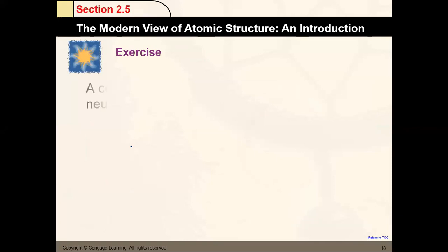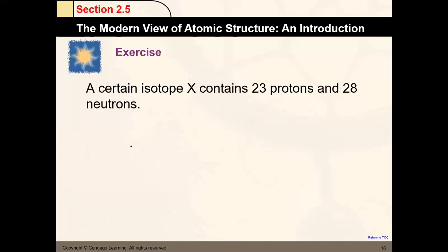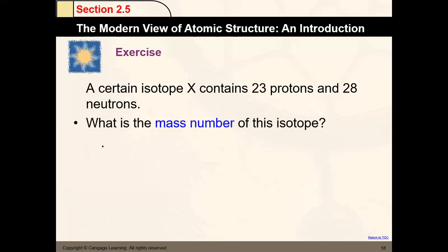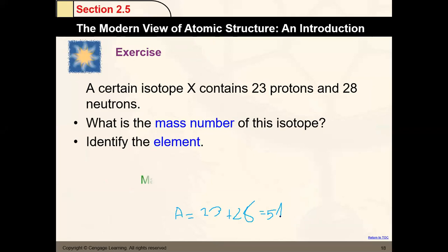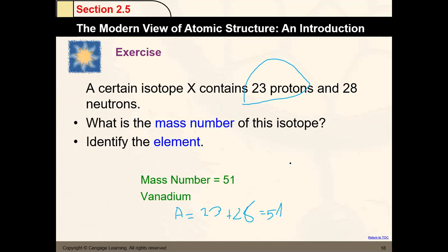An isotope contains 23 protons and 28 neutrons. What is the mass number? A = number of protons + number of neutrons = 23 + 28 = 51. How do I know the element? Because the number of protons is 23 — looking at the periodic table for element 23, I find it's vanadium. V is the symbol of vanadium.